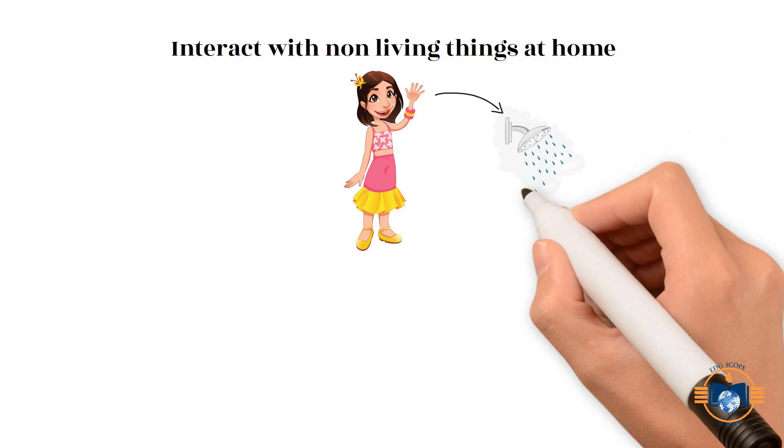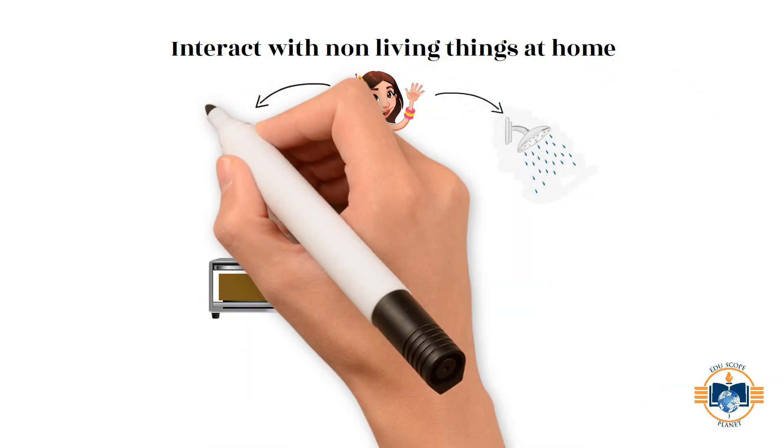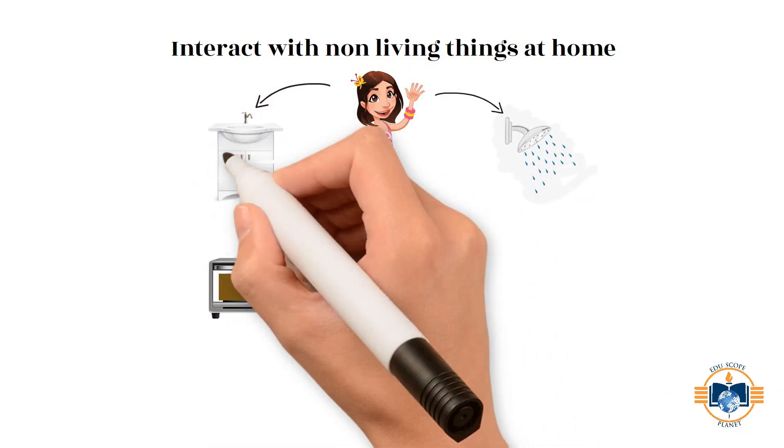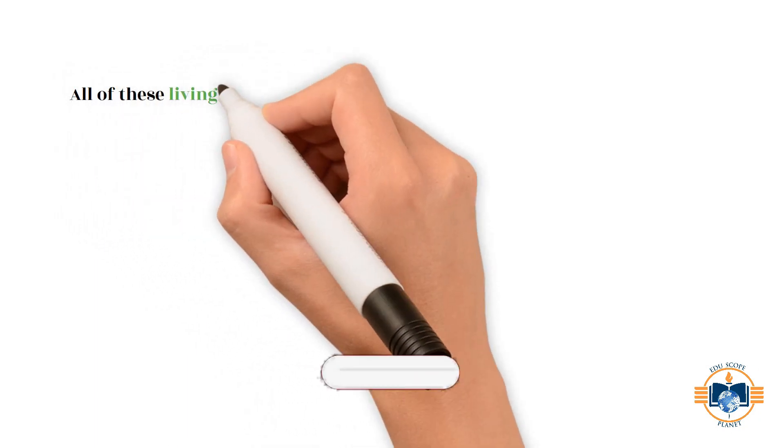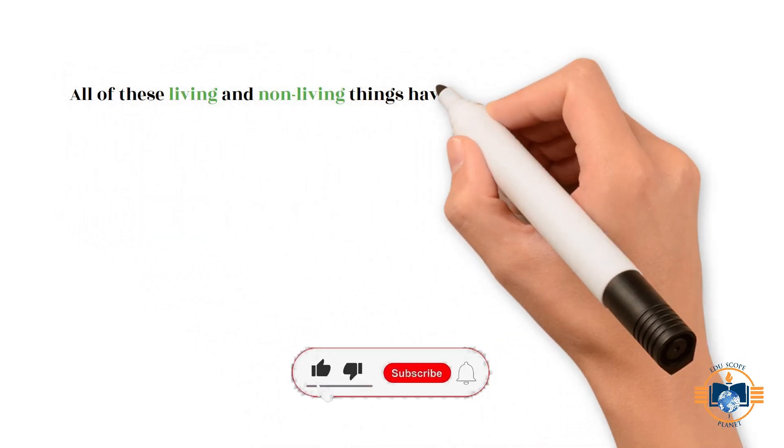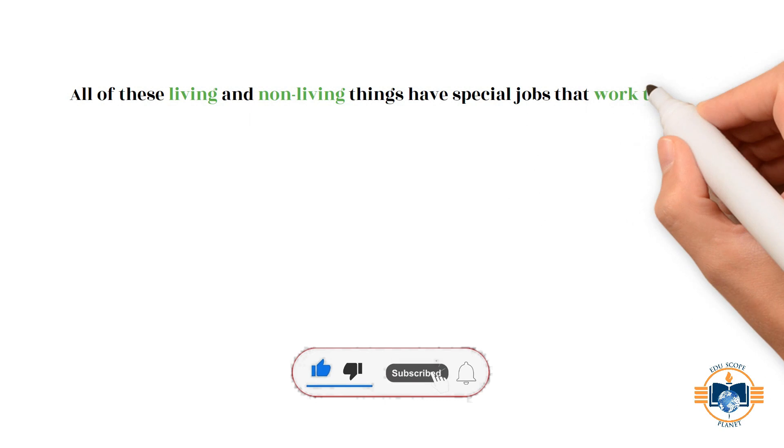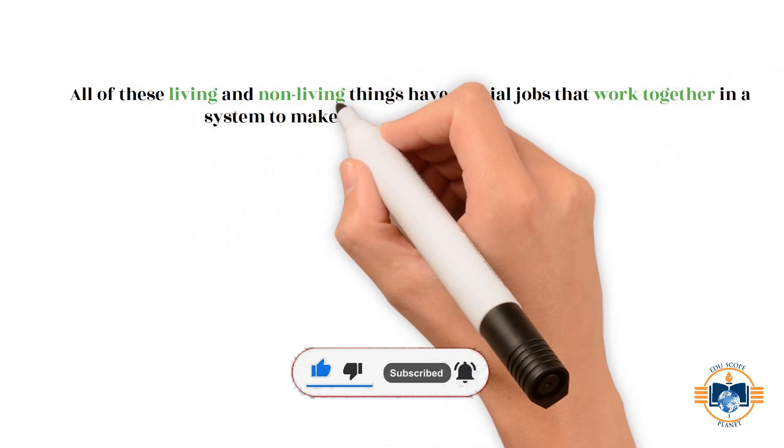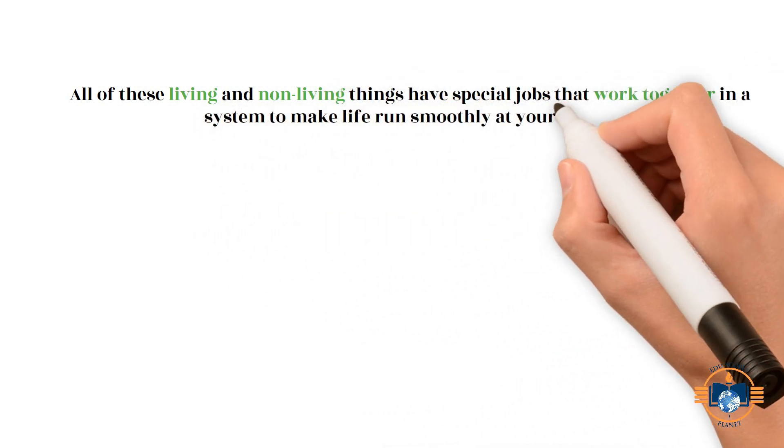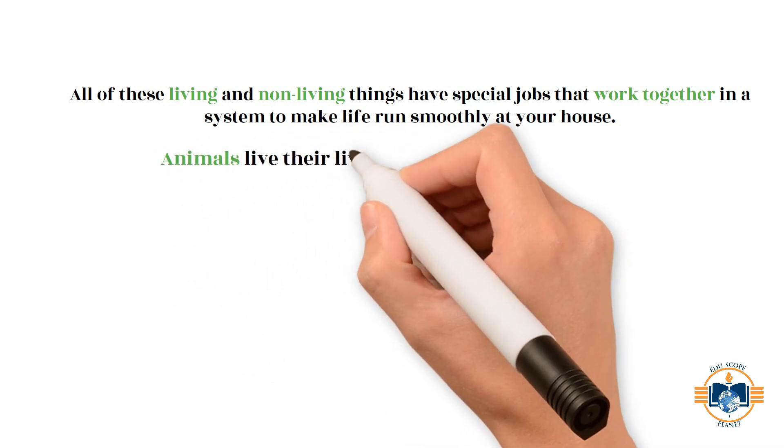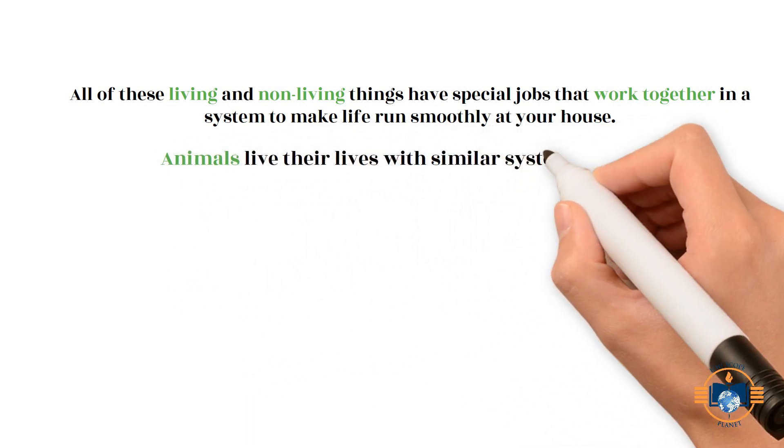Like the shower, oven, and sink, all of these living and non-living things have special jobs that work together in a system to make life run smoothly at your home. Animals live their lives with similar systems known as ecosystems.